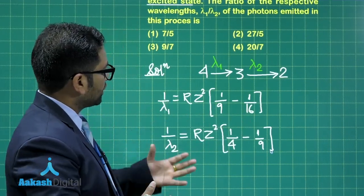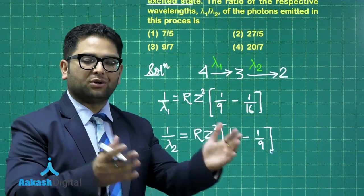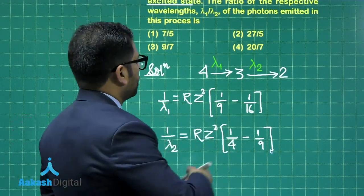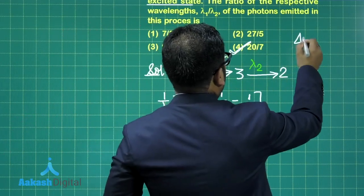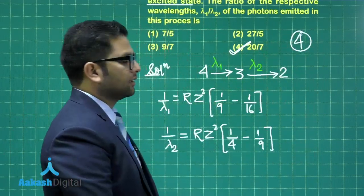You need to divide these equations in order to get the ratio of lambda 1 to lambda 2, which comes out to be 20 is to 7. So option number 4 is the correct one for this.